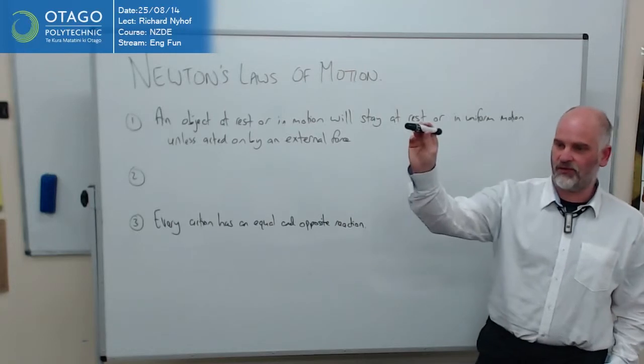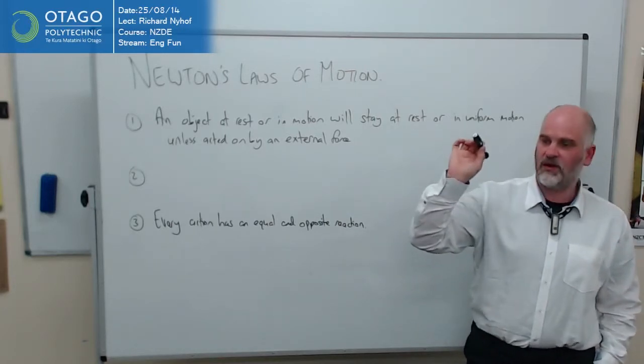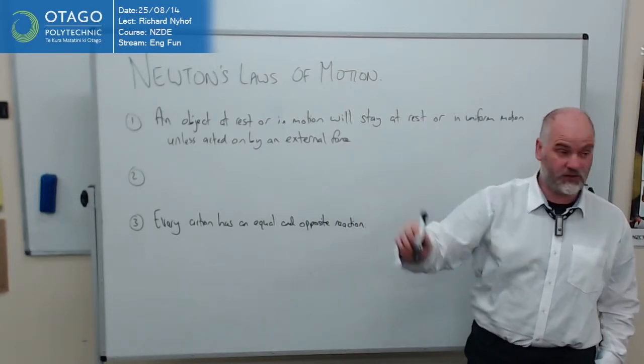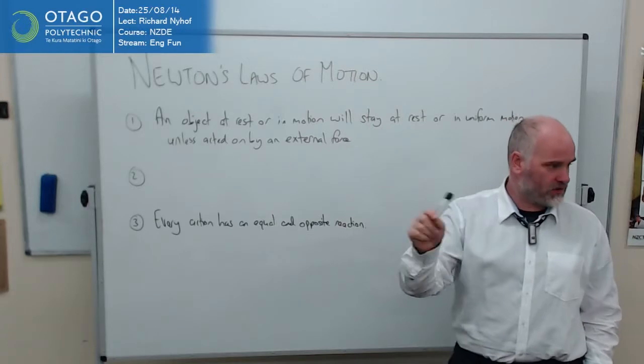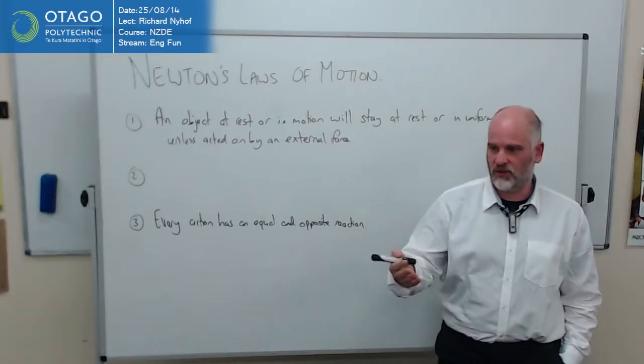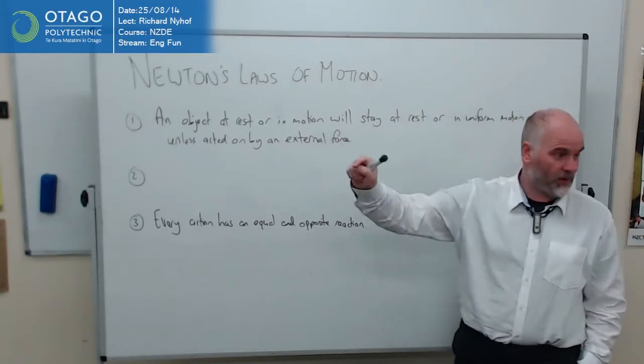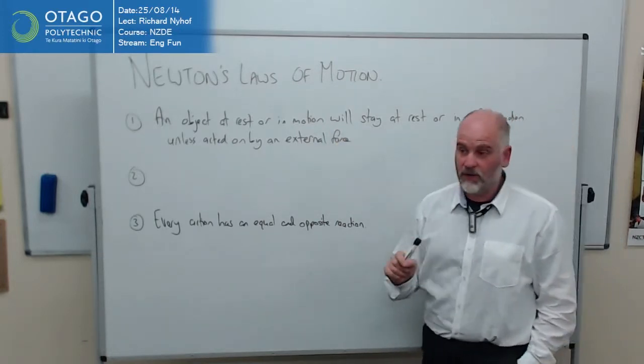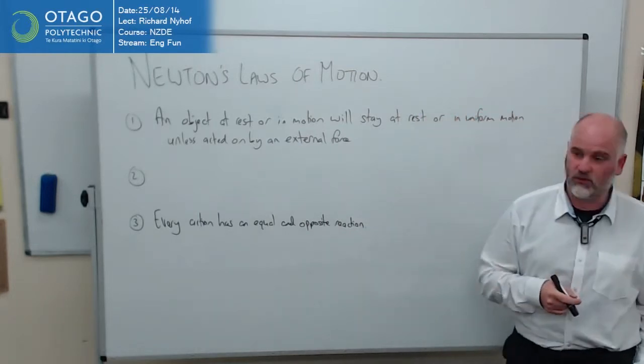So in both those situations, there should be an external force acting. When I throw the thing, the external force is gravity, which means gravity actually starts to drop. It doesn't just carry on in a straight line. When your car is going along, the external force is friction between the car and the road, which slows it down. So it changes the motion. It doesn't keep going in uniform motion. Newton's Law says it will carry on in uniform motion, and this is an external force acting on it.